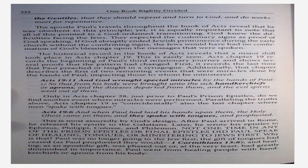Acts 19:6 — And when Paul had laid his hands upon them, the Holy Ghost came on them. They spake with tongues and prophesied. This is most assuredly by God's design. After Paul arrived in Rome, he released his epistle to the Galatians. Later, he wrote his epistles to Ephesus, Philippi, Colossae, and Philemon. Not one time in any of the prison epistles or final epistles did Paul speak of healing, tongues, or ministering to the Jews first. Why is that? Paul was no longer going to the Jew first. The gift of tongues had ceased as Paul prophesied they would in 1 Corinthians 13:8. And healing as an apostolic gift was phased out or at the very least had greatly diminished in importance.